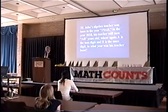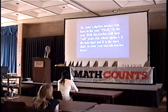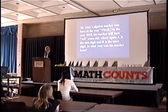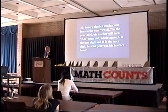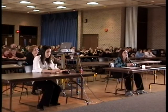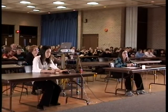A teacher was born in the year 19AB. In the year 2010, his teacher will turn AB years old, where AB is a two-digit number with A as the tens digit and B as the ones digit. In what year was his teacher born? Kate? 1955. 1955 is correct.